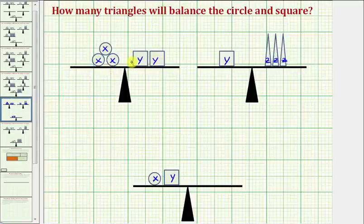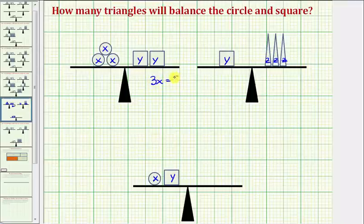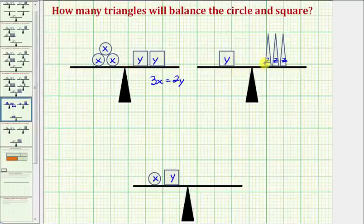Because three circles balance with two squares, we could represent this as an equation where 3x equals 2y. And because one square balances with three triangles, we can represent this as the equation y equals 3z.